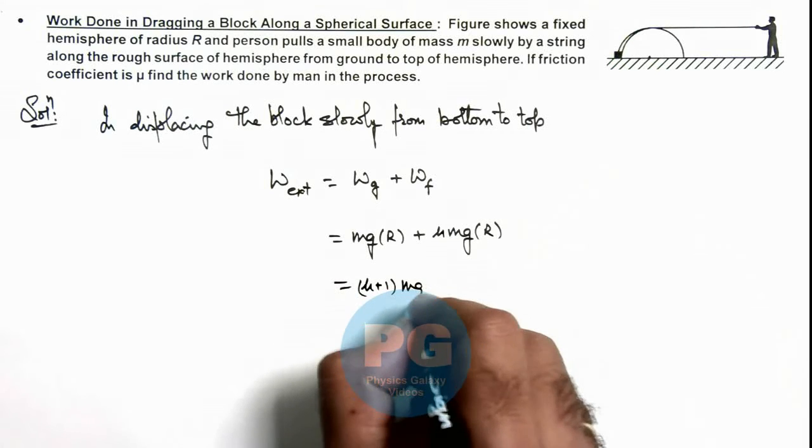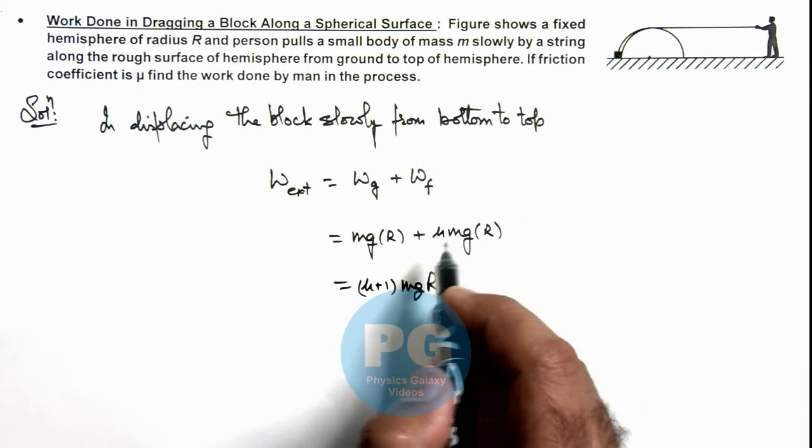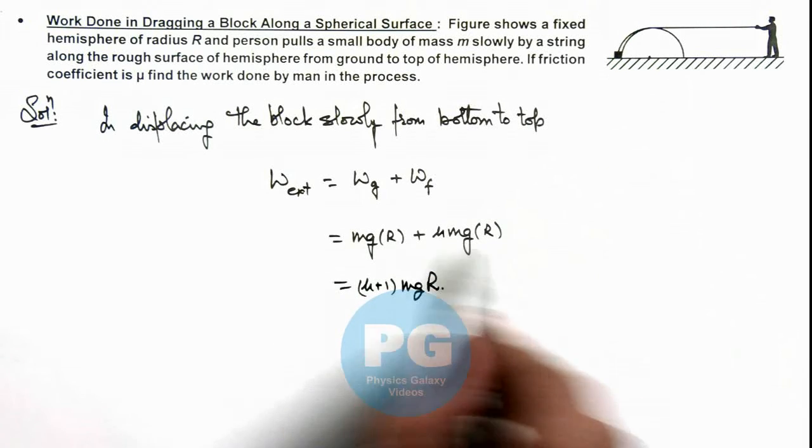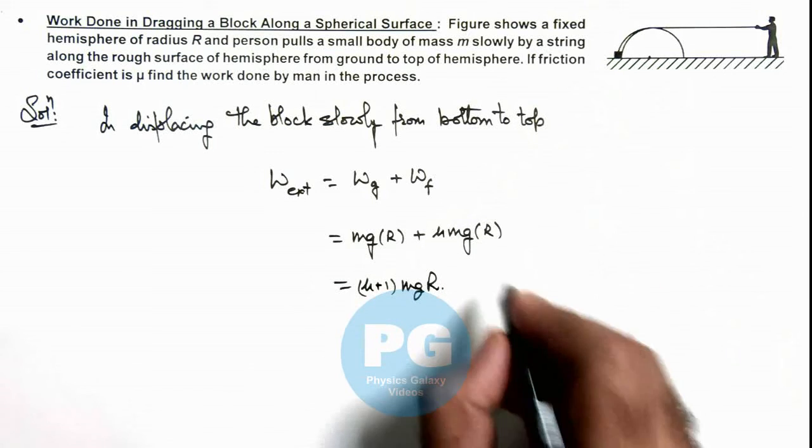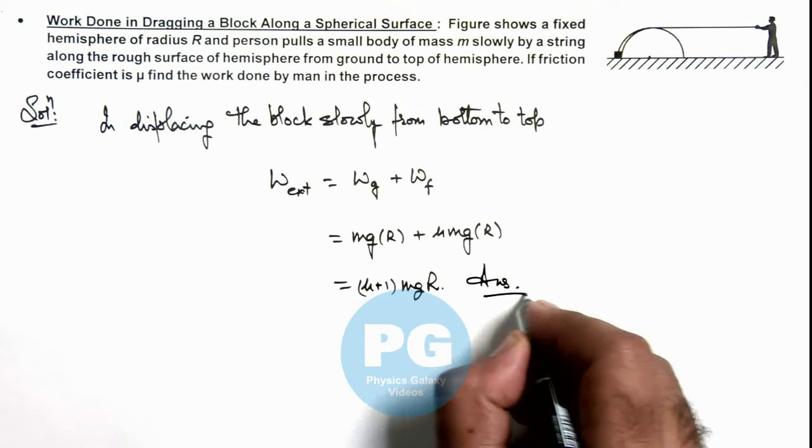So this will be mu plus 1, mgR. That is the total work done required by external agent, as this is the negative work done on the block due to gravity and friction. So this will be the final result of this problem.